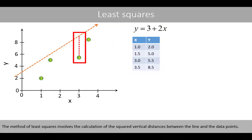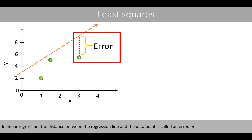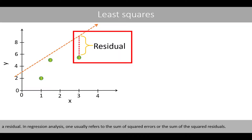The method of least squares involves the calculation of the square vertical distances between the line and the data points. In linear regression, the distance between the regression line and the data point is called an error, or a residual. In regression analysis, one usually refers to the sum of squared errors, or the sum of the squared residuals.